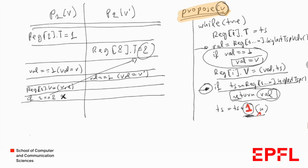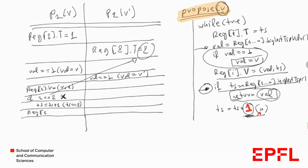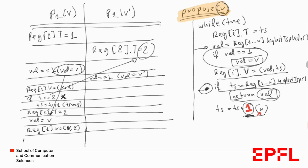Now assume P1 keeps taking steps solo. P1 stores in reg1.v the pair (V, timestamp 1), then checks whether its timestamp 1 equals the highest timestamp, which is 2. This is false, so P1 increments its timestamp to 2. P1 then writes timestamp 2 to its array location, retrieves its own value V (since P2 has not written anything), stores (V, 2), and checks if its timestamp 2 equals the highest timestamp 2. This is true, so P1 decides V.